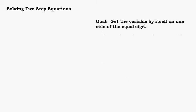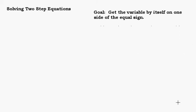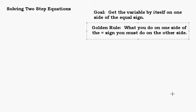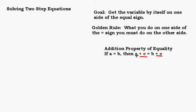Let's review a little bit about what we learned in solving one-step equations. The goal with any equation is to get the variable by itself on one side of the equal sign. We start doing stuff to both sides of the equal sign using this golden rule: whatever I decide to do on one side of the equal sign, I have to do on the other side.